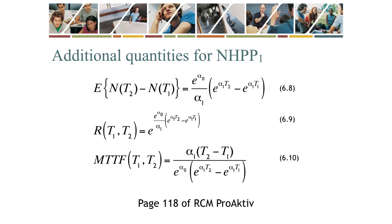From the definition of the NHPP for model Rho1(T), one can calculate three additional quantities. Equation 6.8 calculates the expected number of failures in any interval T1 to T2. By setting T1 equals zero, the absolute expected number of failures up to T2 can be calculated. Equation 6.9 calculates the probability that the system will survive from T1 to T2; by setting T1 equals zero, the absolute survival probability up to T2 can be calculated. Equation 6.10 calculates the mean time to failure in the interval T1 to T2; by setting T1 equals zero, the cumulative mean time to failure up to T2 can be calculated.